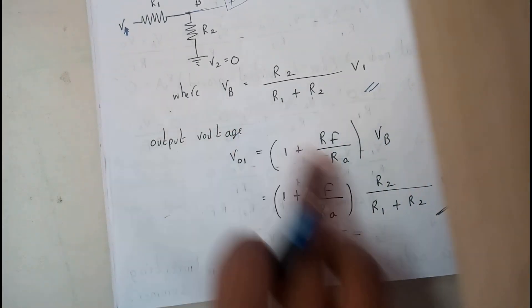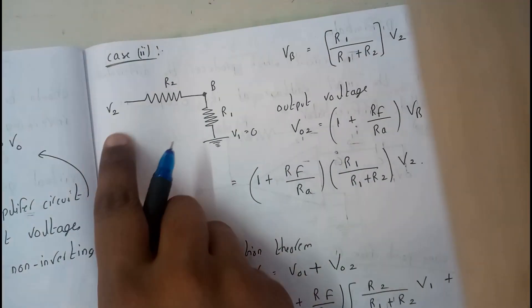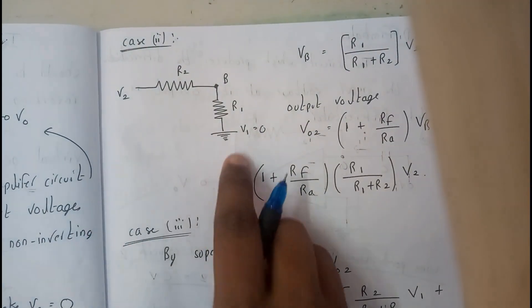Further moving on, we know that VB value so we substituted the VB value. This will be our V01. Further moving on we will be finding V02 by making V2 will be giving a value and V1 by making it ground.